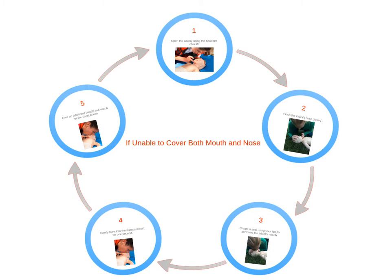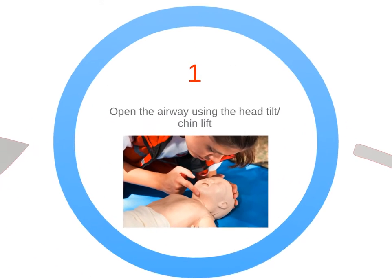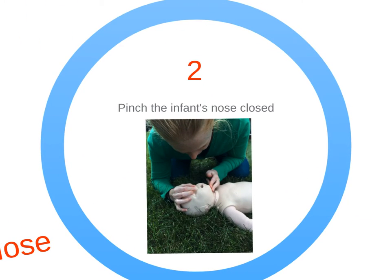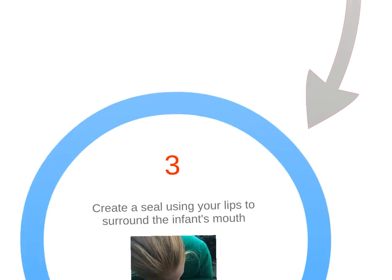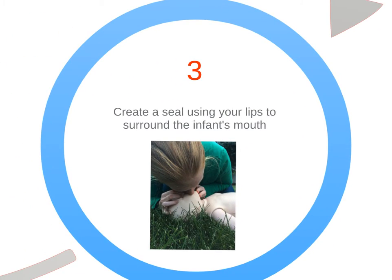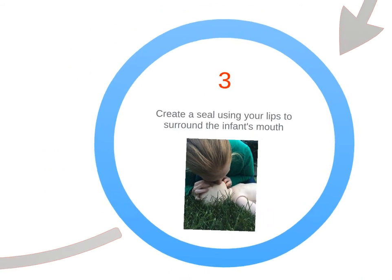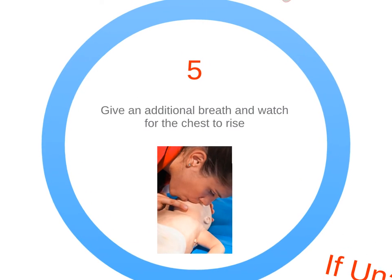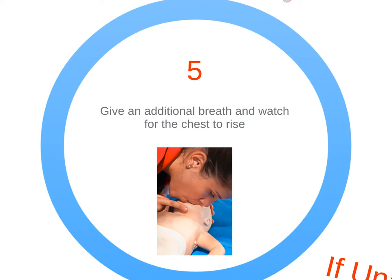The next approach is only if you are unable to cover the infant's mouth and nose with your mouth. First, open the airway. Next, assuming you are unable to cover the infant's mouth and nose with your mouth, pinch the nose shut. Create a seal using your lips around the infant's mouth. Deliver the breath and watch the chest rise. As always, readjust the airway if necessary. Then deliver your second breath.